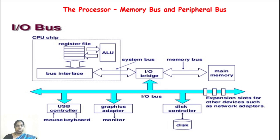The interface between the processor and the I/O device typically includes an I/O controller. The block diagram includes a USB controller, graphics controller or graphics adapter, and network controller, each connected to their respective devices.